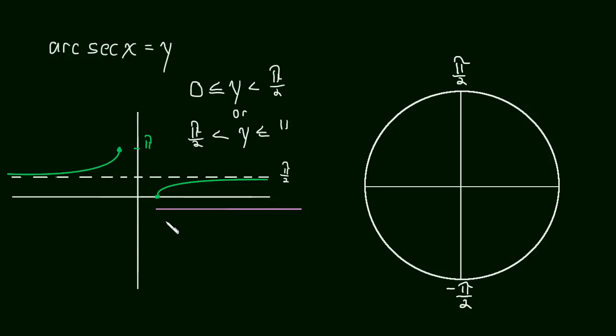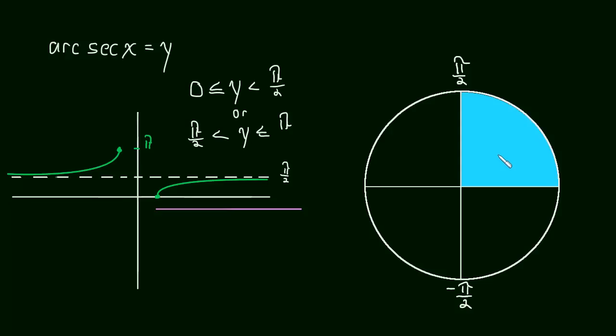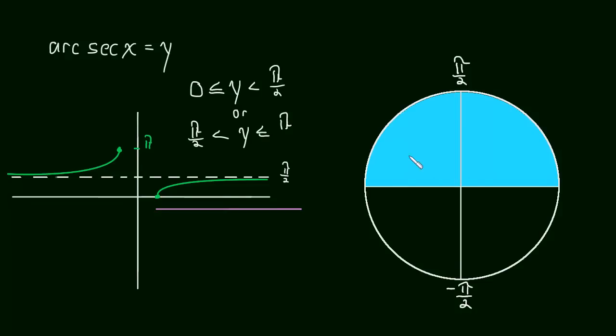Okay, so we know what y is between. Well, that means that we have, it's between 0 and pi over 2, so that's here, excluding pi over 2, of course. And it's between pi over 2 and pi, so that's here.